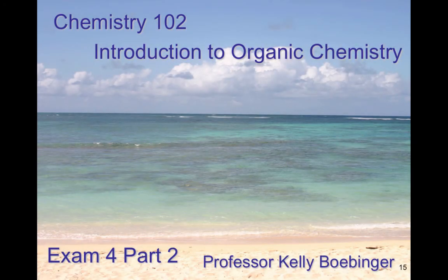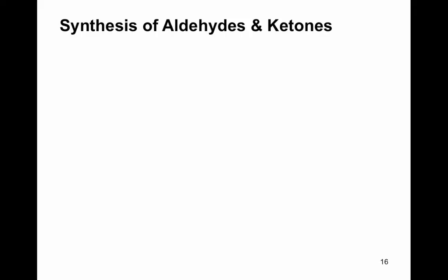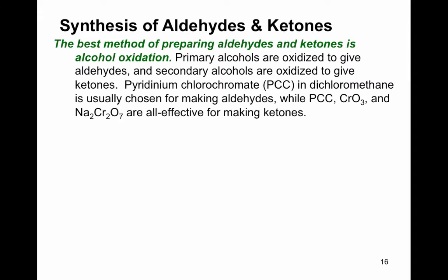Chem 102 Exam 4 Part 2: Synthesis of Aldehydes and Ketones. The best method for preparing aldehydes and ketones is alcohol oxidation. Primary alcohols are oxidized to give aldehydes, and secondary alcohols are oxidized to give ketones. PCC in dichloromethane is usually chosen for making aldehydes, while PCC, CrO3, and Na2Cr2O7 are all effective for making ketones.